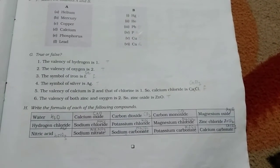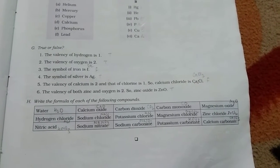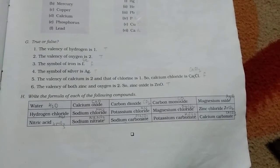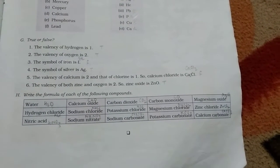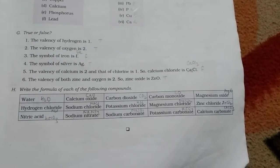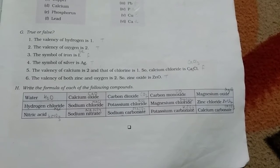Now, come to true and false. The valency of hydrogen is 1. Is true. The valency of oxygen is 2. True. The valency of iron is 1. Is false. The symbol of silver is Ag. True. The valency of calcium is 2 and that of chlorine is 1. So, calcium chloride is CaCl2. False, because it was written as Ca2Cl.